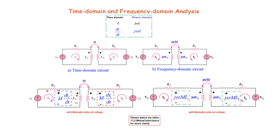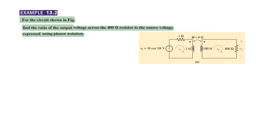It is strongly recommended to watch video 13.2 which discusses mutual induction in great detail with derivation of formulas. Now let's solve example 13.2: for the circuit shown, find the ratio of the output voltage across the 400Ω resistor (V2) to the source voltage (V1) using phasor notation. This means we must convert the circuit into the frequency or phasor domain.